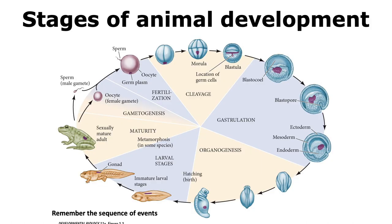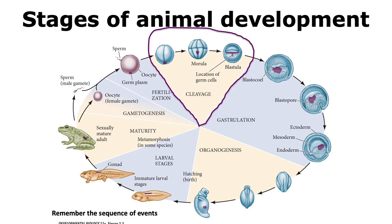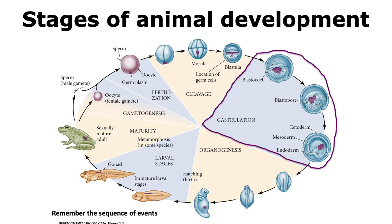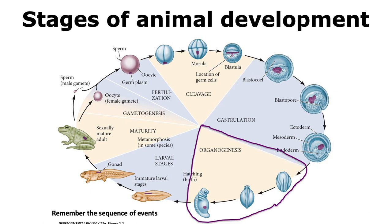Let us continue with the example of the frog and look at the different steps of animal development. Fertilization is where the haploid gametes — the sperm and the oocyte or egg — fuse to form a single-celled zygote. This zygote then undergoes cleavage, dividing many times to ultimately form a blastula. The blastula then undergoes gastrulation, where cells migrate to form the three germ layers: the ectoderm, the mesoderm, and the endoderm. Once gastrulation is complete, organogenesis occurs, where the different organs of the organism are formed.